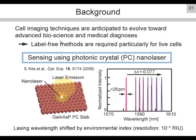As a label-free method, we have studied sensing using a photo-pumped photonic crystal nanolaser. This schematically shows a nanolaser composed of a gallium indium arsenide phosphide semiconductor slab with an array of air holes. It is operated by photo-pumping. Since the laser cavity is exposed to air, the resonance wavelength is shifted by the environmental refractive index if some medium is attached.